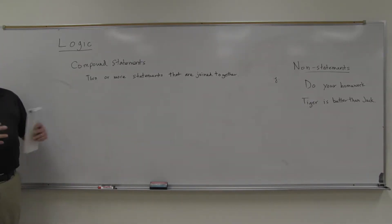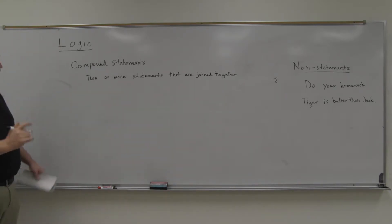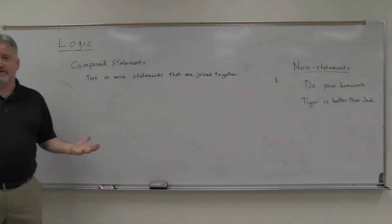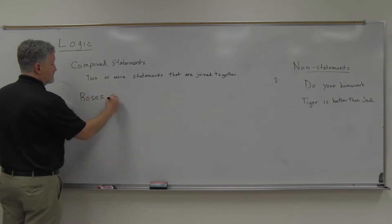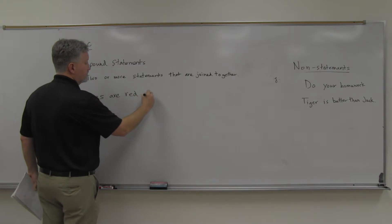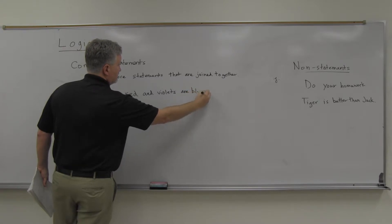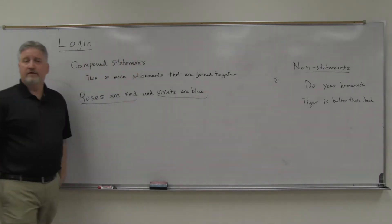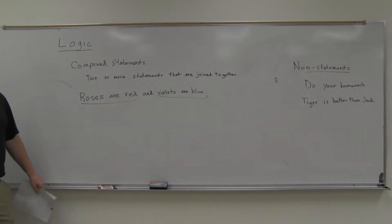Compound just means you have two statements joined together. Today we'll look at two ways to do that: 'and' statements and 'or' statements. For example, 'roses are red and violets are blue' — 'roses are red' is one statement and 'violets are blue' is another, joined together with 'and.'